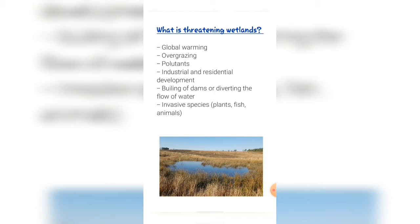Industrial and residential development on or around wetlands also affects them. Building of dams or diverting the flow of water affects wetlands. Invasive species such as plants, fish and animals have a hugely negative effect on wetlands. Invasive plant species usually use more water than indigenous plant species, and invasive fish and animal species usually breed faster than indigenous species, and therefore they chase indigenous species out of the wetland, disrupting the delicate balance of the wetland ecosystem.